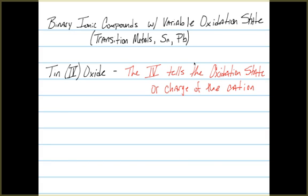In the name tin(IV) oxide, we have the Roman numeral 4, and that Roman numeral 4 tells us the oxidation state or charge of the cation, in this case the tin. Any of these transition metals, tin, or lead, with a few exceptions we'll see in the future, will have a Roman numeral in them so that you know what charge you're dealing with.